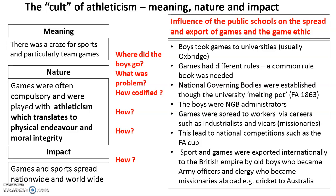From this, national governing bodies were established. For example, the Football Association was developed in 1863 — this was when handling the ball was outlawed. At the end of that year, players from around the country came together to form the Football Association, creating a national governing body. All of this came from boys who attended public schools, who then became national governing body administrators.